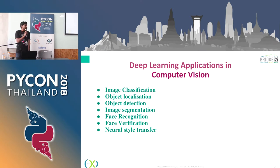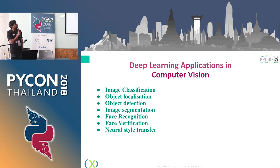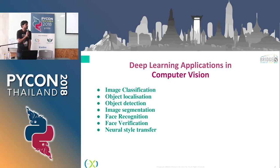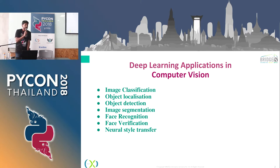Computer vision is not a new field. It's quite an old field and we have been doing this work since the early days of computing. Image classification, object localization, object detection, image segmentation, face recognition, face verification, neural style transfer — these are some of the applications mostly found in computer vision, and they have been handled with traditional methods, which mostly involve signal processing.